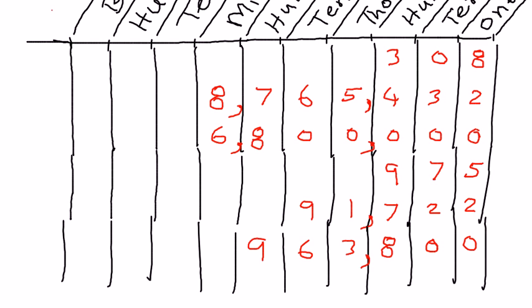And that is the way we use the place value chart to place the numbers in their respective locations. In my next presentation, we shall see how to write whole numbers in expanded form.